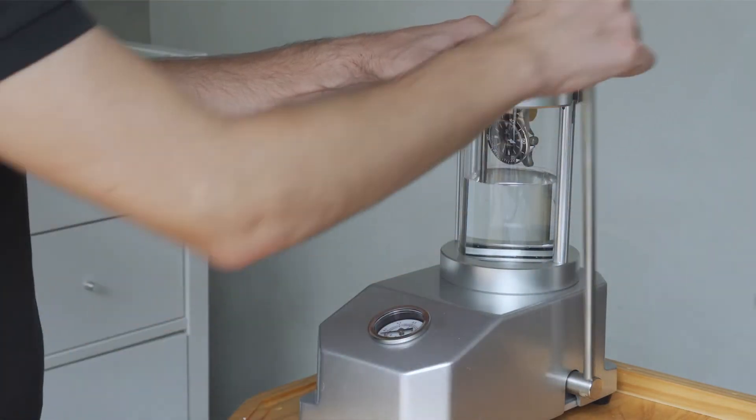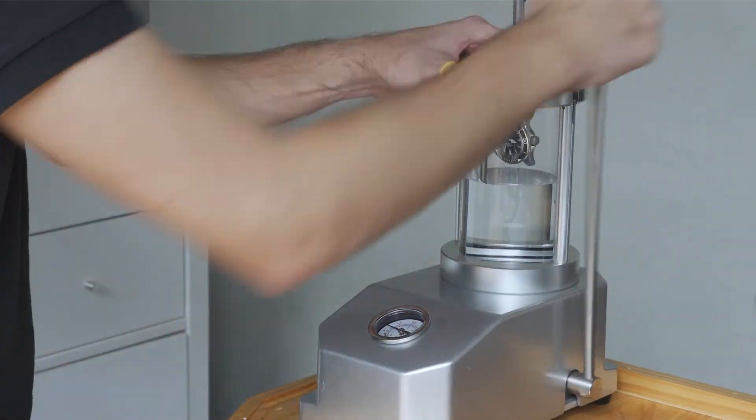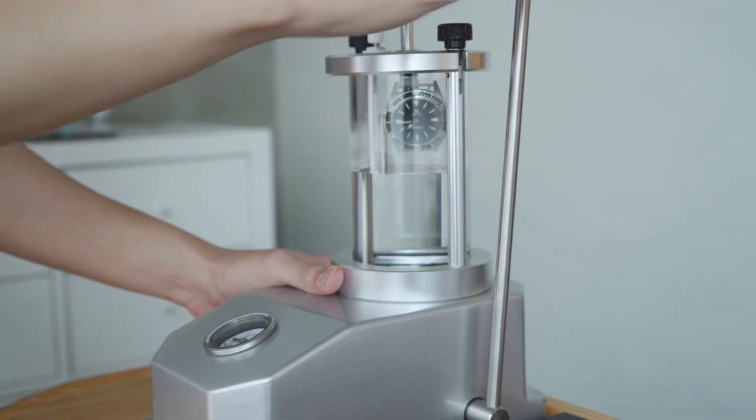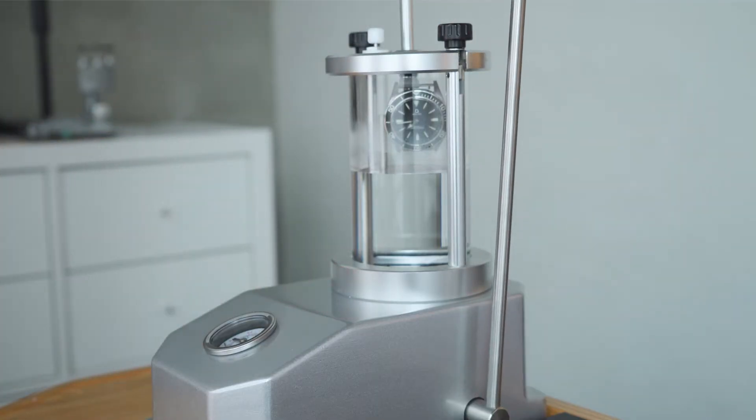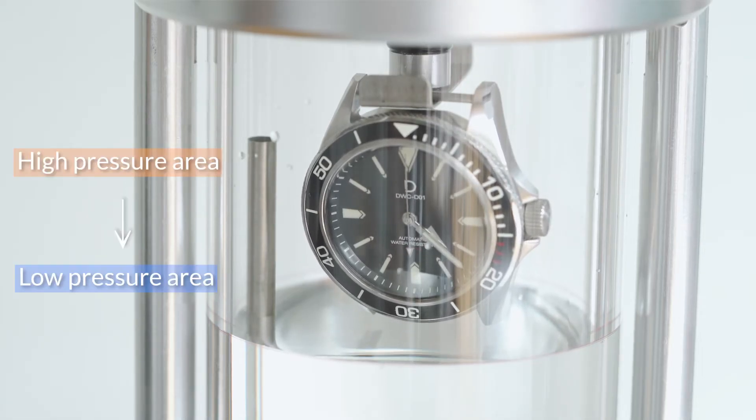With the watch above the water, we'll pressurize the chamber by pumping with this crank. We'll now wait about a minute before we release the air from the chamber. This is a good time to explain how the tester works. Simply put, air flows from high pressure areas to low pressure areas.